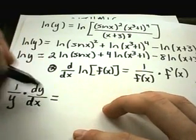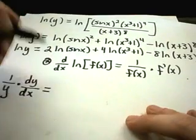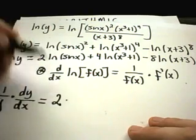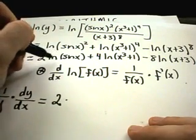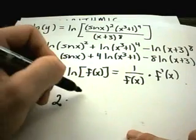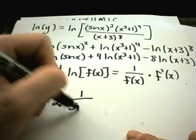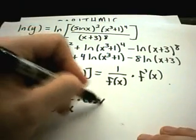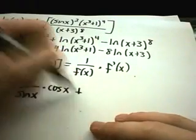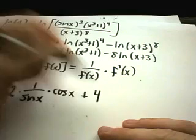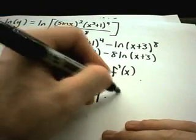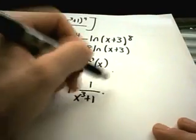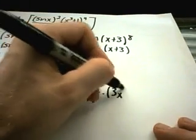Or sometimes they'll abbreviate this as y prime. Now I'm going to take the derivative on the right hand side. The two comes along for the ride. If I take the derivative of ln of sin x using this formula, I'll get one over sin of x, multiply that by the derivative of sin x which is just cosine of x. On my next term, the four comes along for the ride. I get one over the stuff, x cubed plus one, and then I have to multiply that by the derivative which is three x squared.